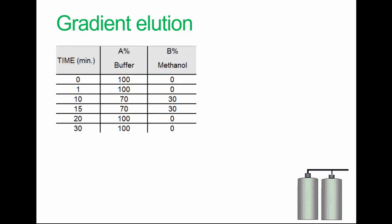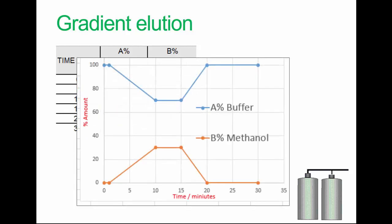So here's an example of a method. We start off with 100% of A and 0% of B, which is methanol. And we switch over after about 10 minutes to 70% of buffer and 30% of methanol. And then back to the original mixture, which we can graph as looking like this. This will typically facilitate the separation of different components of different polarities.